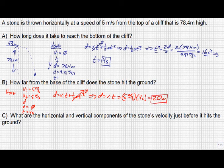Finally, for part c, it asks us what are the horizontal and vertical components of the stone's velocity just before it hits the ground? Well, in the horizontal direction, we already know that the velocity is 5 meters per second. So we can write vx is 5 meters per second. Final velocity in the y direction, though, we haven't figured out yet.